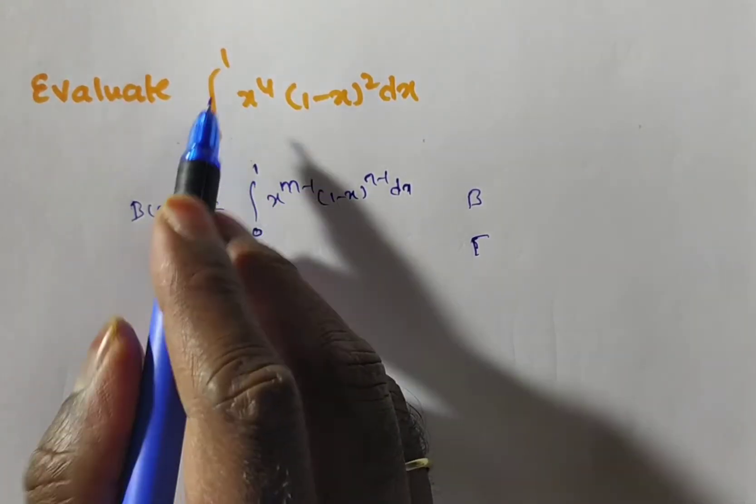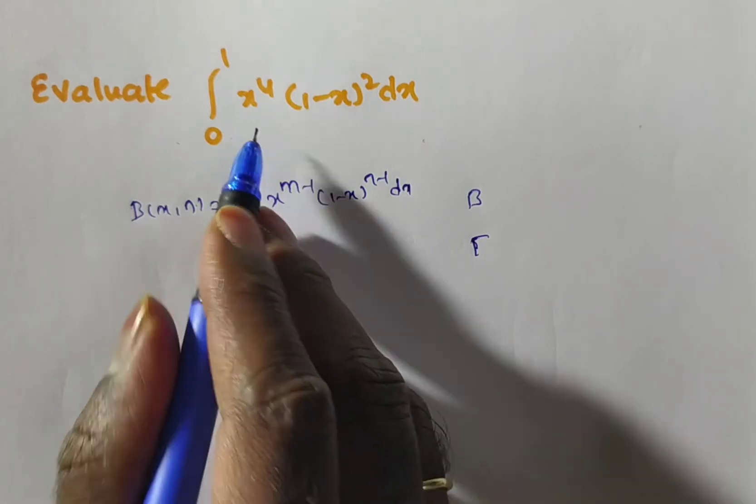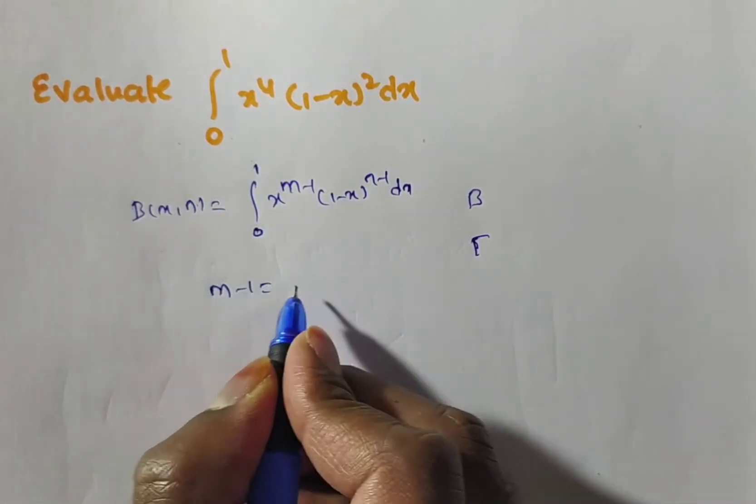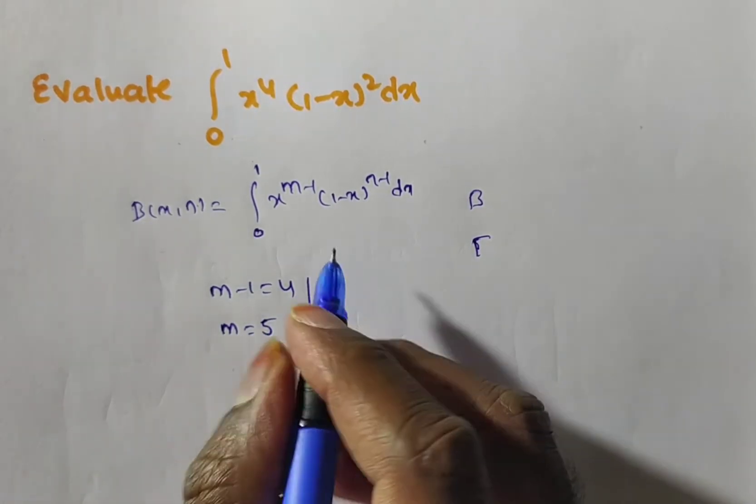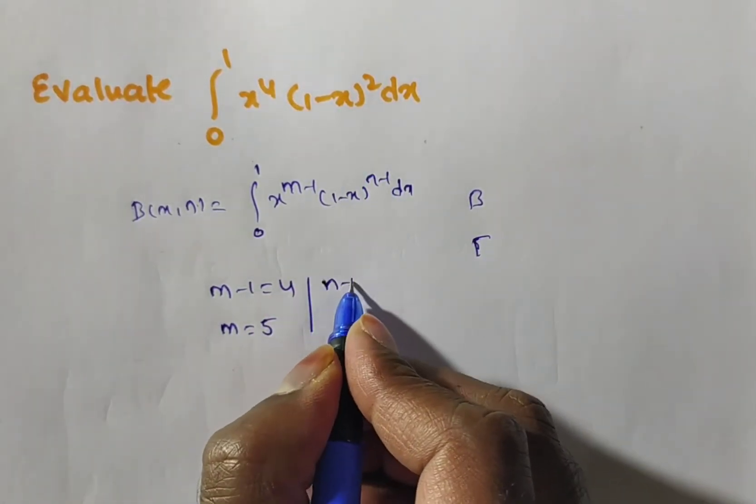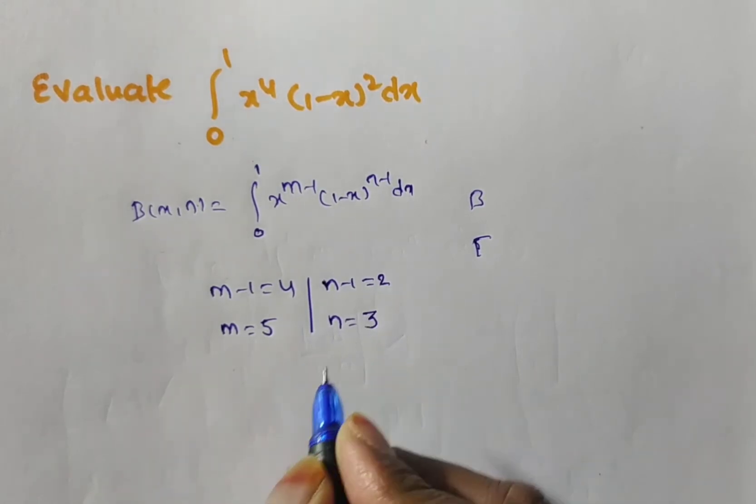Compare on both sides, limit 0 to 1. x power m minus 1, in place of m minus 1 what I have? 4. So m is equal to 4 plus 1 means 5. Next, in place of n minus 1 what I have? n minus 1 is equal to 2. Then n is 3.